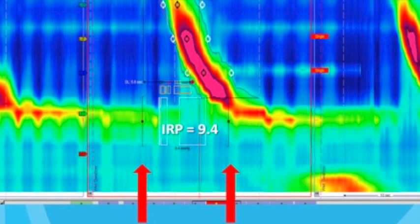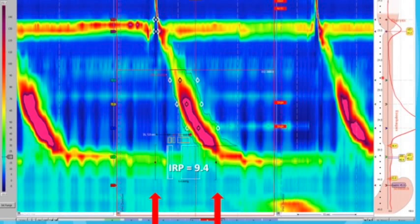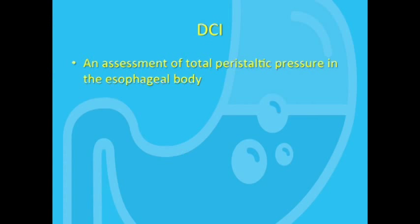While it's not essential to understand the mathematics of the IRP calculation, it is important to know that a high IRP that is greater than 15 millimeters of mercury indicates that the EGJ is not relaxing appropriately with swallows, and this is a significant manometric finding.